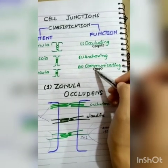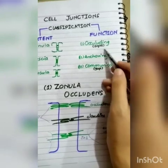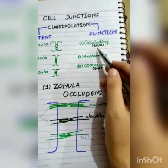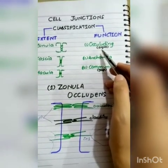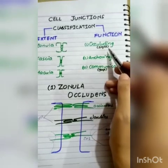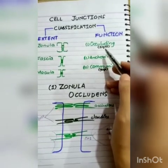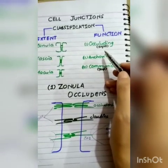Function-based classification includes occluding junctions, anchoring junctions, and communicating junctions. Occluding junctions are also called tight junctions. They are complete junctions that block the intercellular space so that substances cannot diffuse through.